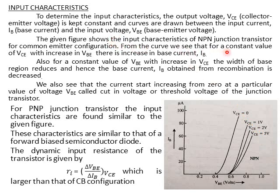From the curve we see that for a constant value of VCE, with increase in VBE, there is an increase in base current IB. Also, for a constant value of VBE, if we increase VCE — say 0, 1, 2, 5 — with increase in VCE, the width of the base region reduces. Hence the base current IB obtained from recombination is decreased, because the base region becomes smaller, reducing electron-hole recombination.